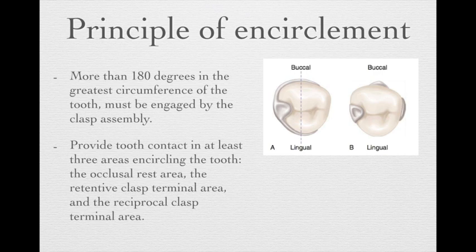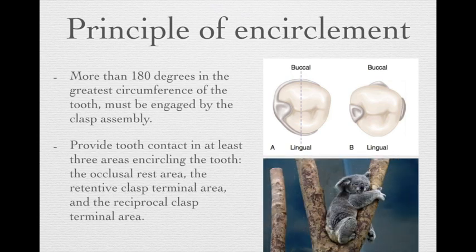If you're unsure what the principle of encirclement means, think about a koala. A koala tries to rest over a tree, so it has to use its arms to hold the trunk. This holding of more than 180 degrees provides retention.